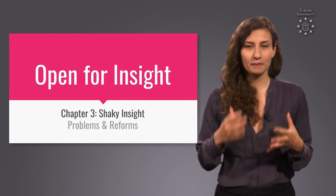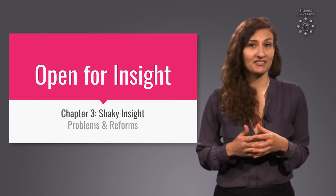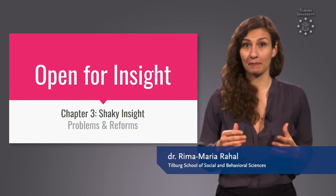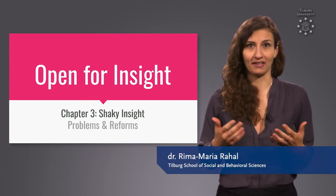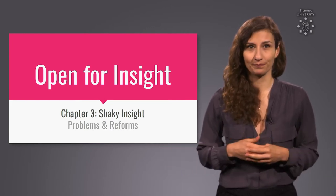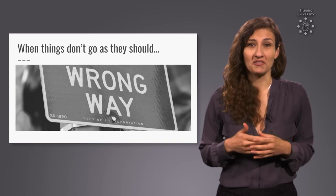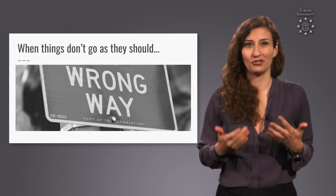In this part of the course, we will speak about the problems that can occur when science isn't done quite the way it should be. We will also speak about steps that are being taken to reform science, so such problems are ameliorated. First, let's take a look at how sometimes things don't go quite as they should in science.